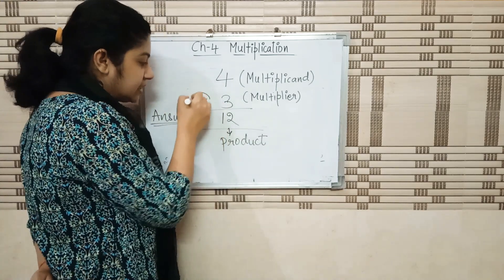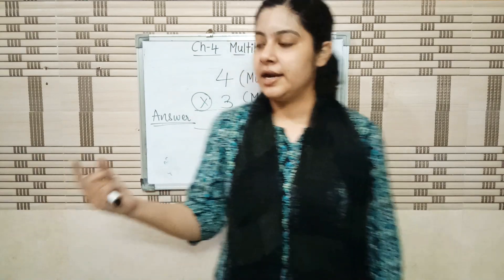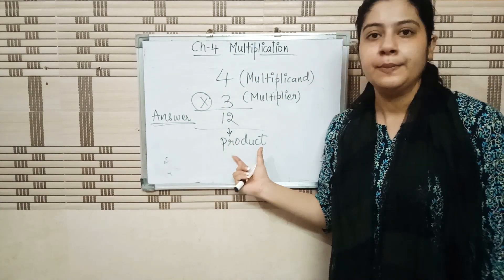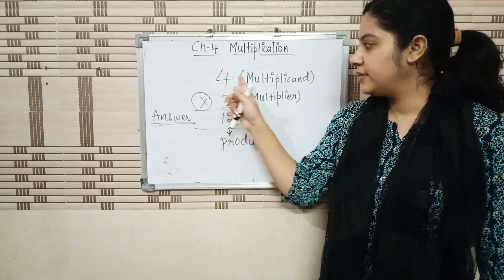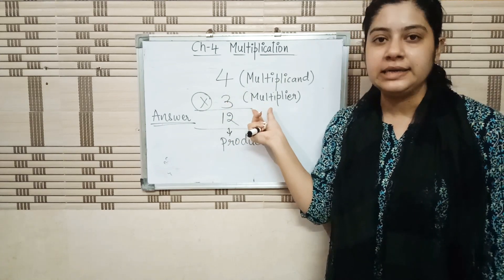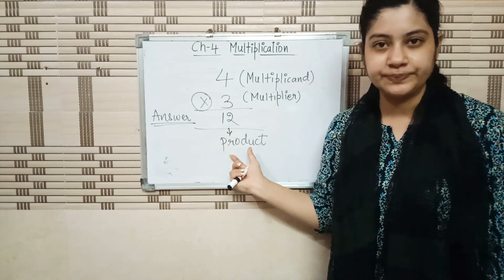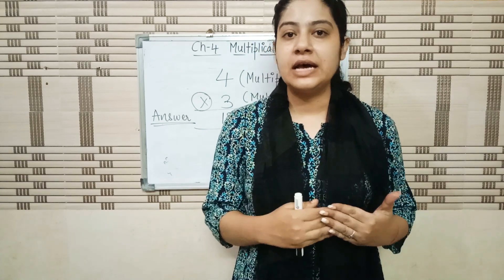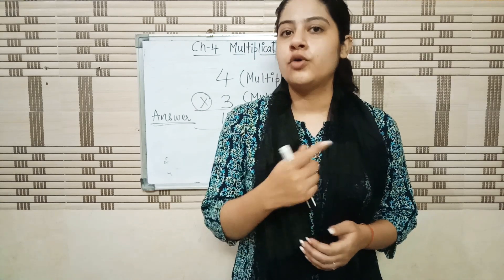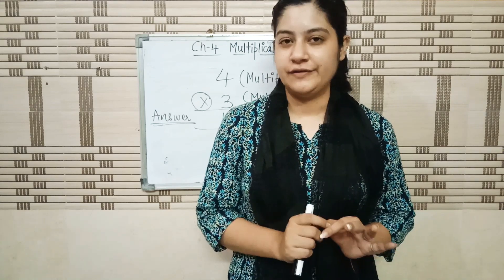Answer of addition is sum, answer of subtraction is difference, and now answer of multiplication is product. This number we call multiplicand, this we call multiplier, and the answer or the result of multiplication is product. So you have to learn table from 2 to 5. It's your homework to learn. No need to write it anywhere, just learn table 2 to 5.